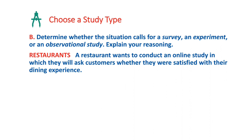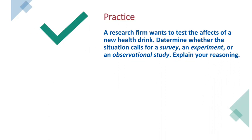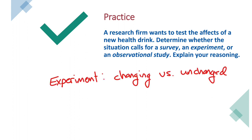A restaurant wants to conduct an online study asking customers whether they are satisfied with their dining experience — like you see at Applebee's. This is a survey because customers are being polled for their opinion. The next practice problem involves testing the effects of a new health drink, which is an experiment: you have an unchanged group who does not drink the health drink and a changing group who does, and you compare results between the two.